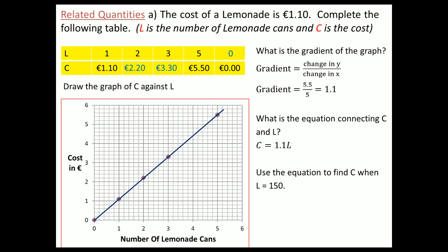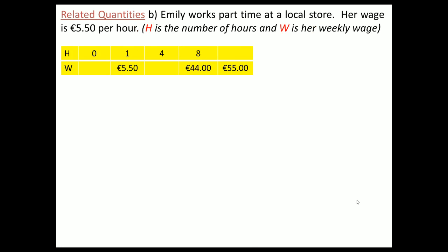We can use this equation to find c when l equals 150. We substitute in the value of 150 and get 150 times 1.1, which is 165 euros. In another example, Emily works part-time at a local store. Her wage is £5.50 an hour, h is the number of hours, and w is the weekly wage. If she works one hour she earns £5.50; no hours earns nothing.